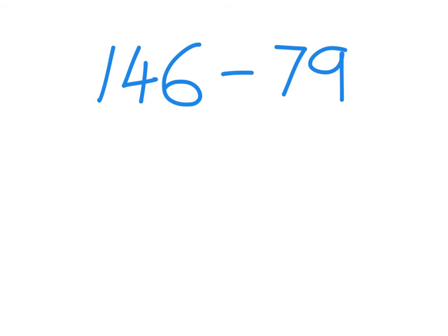I go, as usual, I can't use place value partitioning, because six take away nine I can't do. So, let's use equal adjustments. $79, I'm always going to make the second number the tidy number. I'm going to plus one, which makes it $80.